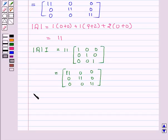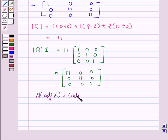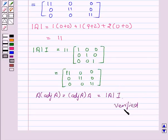Thus, we see that A into adjoint of A equals adjoint of A into A equals determinant of A into I. So it is verified that these three terms are equal to each other. Hope you understood the solution and enjoyed the session. Goodbye and take care.